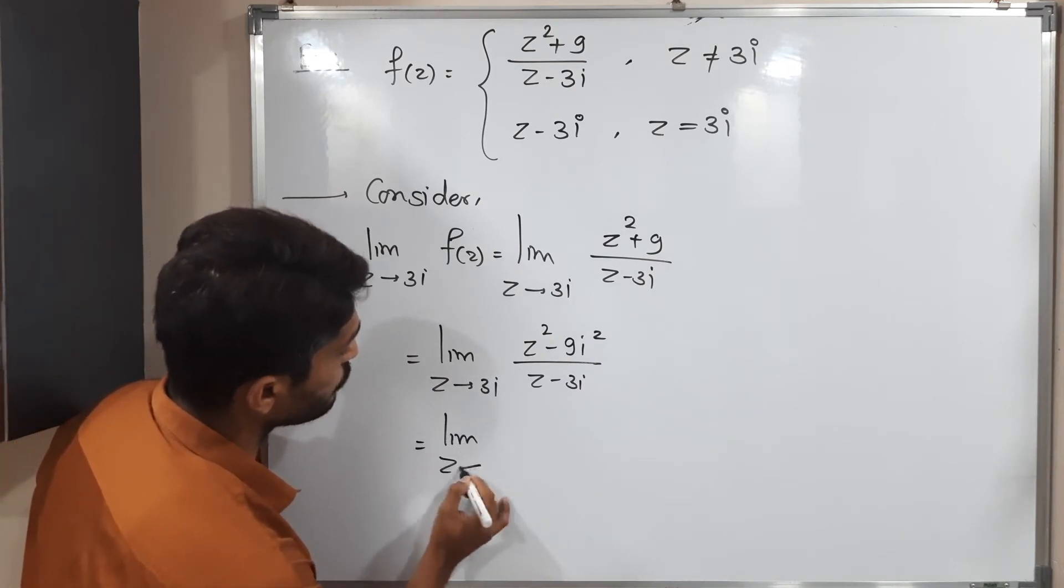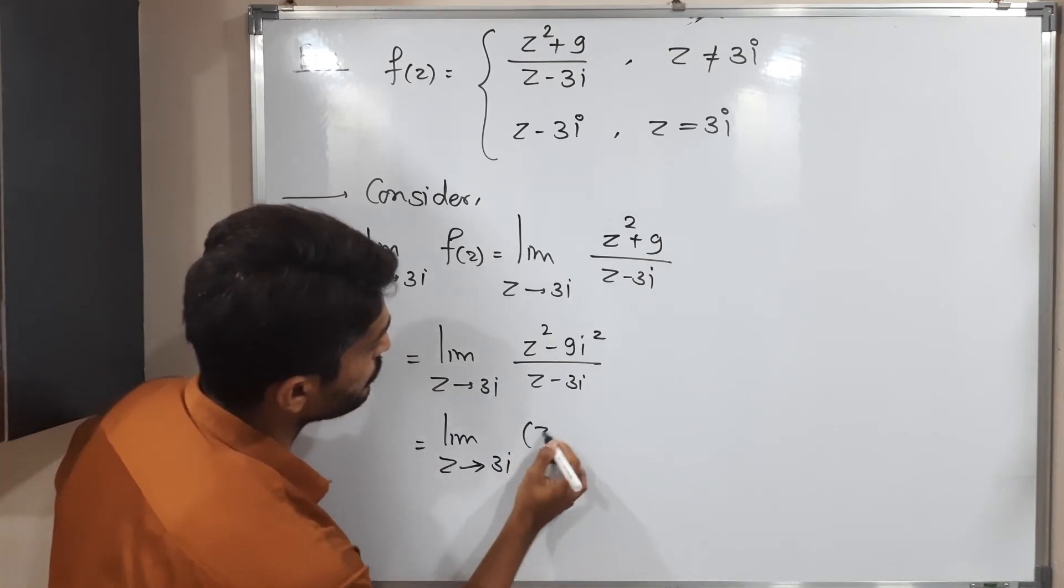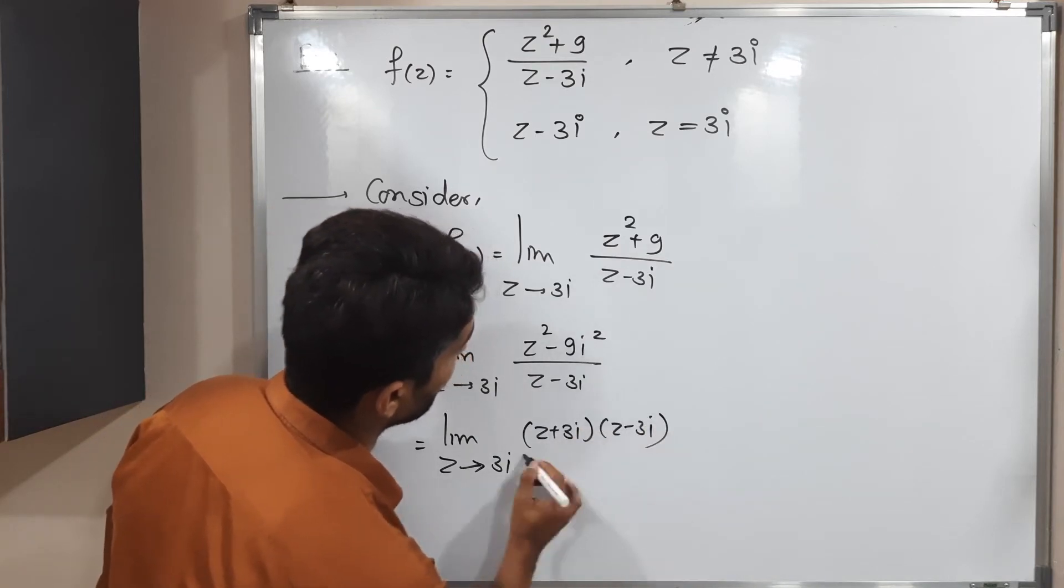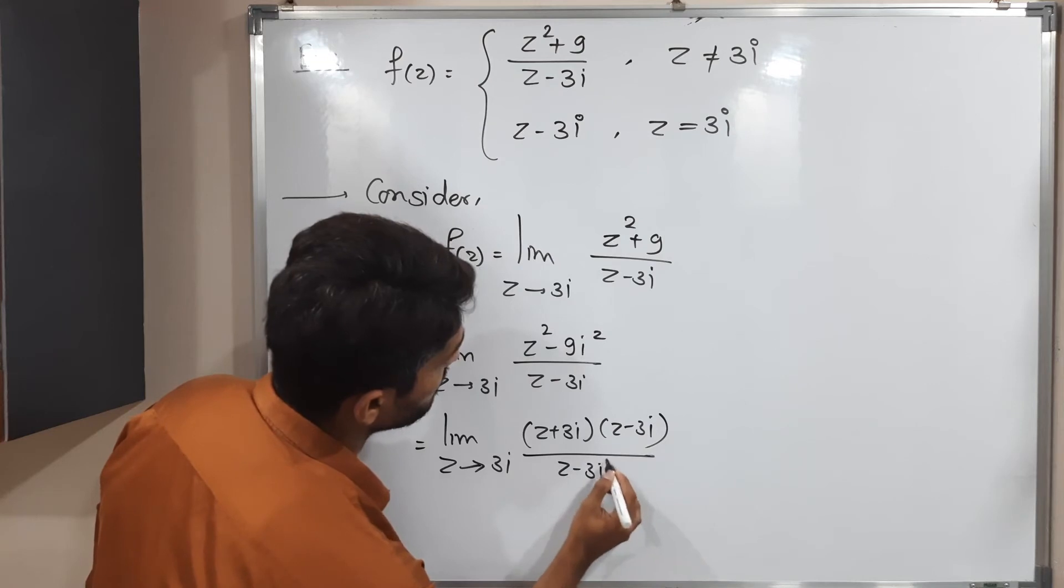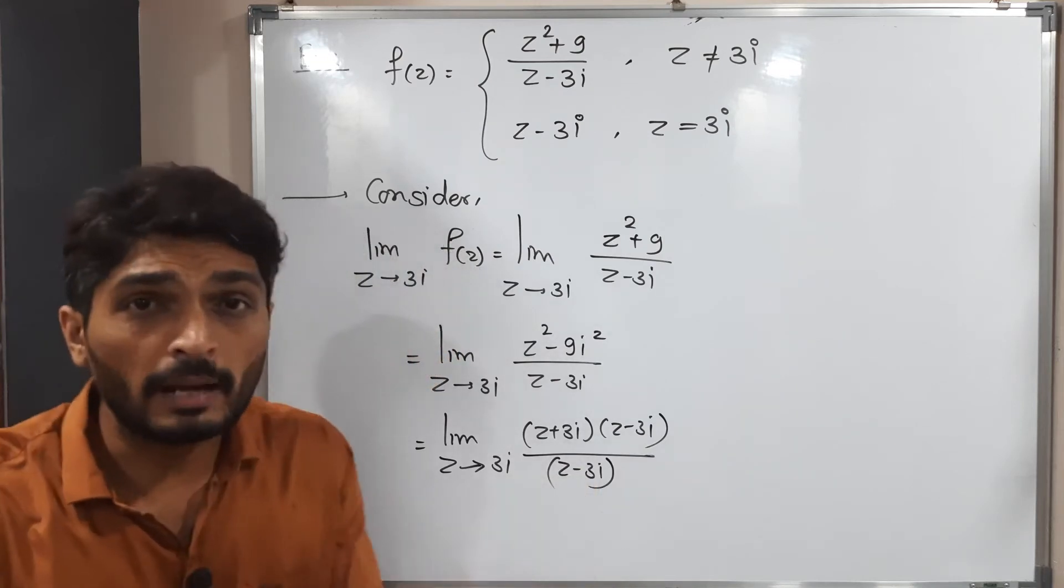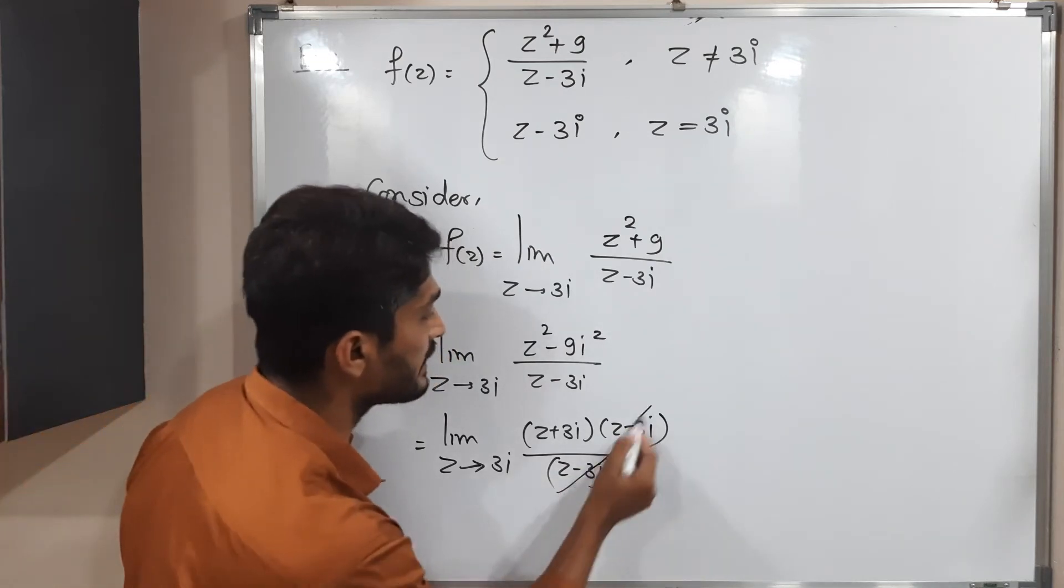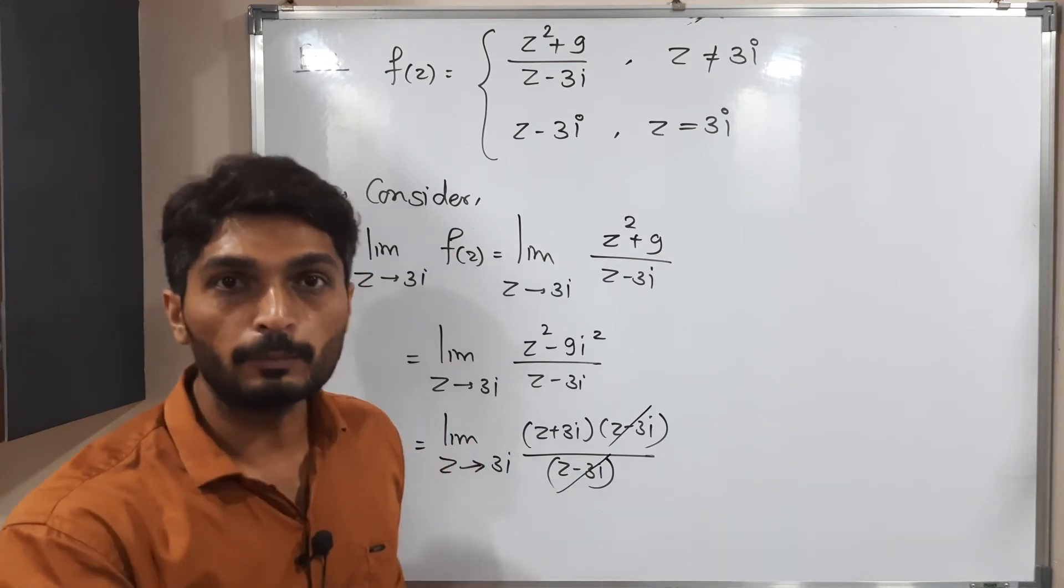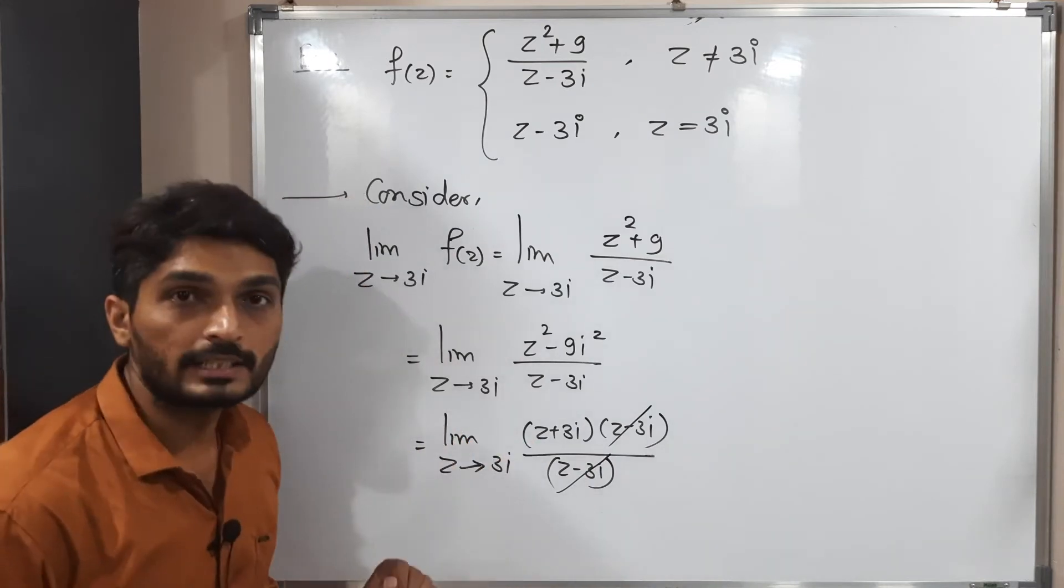So therefore, limit z tends to 3i. What can we do? Z plus 3i, z minus 3i, divided by z minus 3i. So we are so much happy to cancel this z minus 3i, z minus 3i. That denominator is canceled. Now we can ready to put limit.